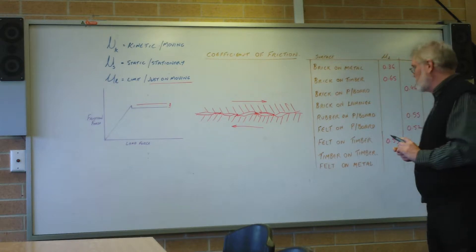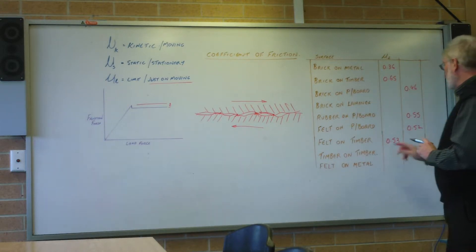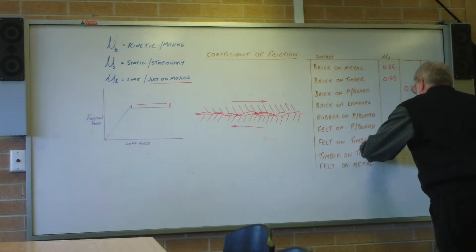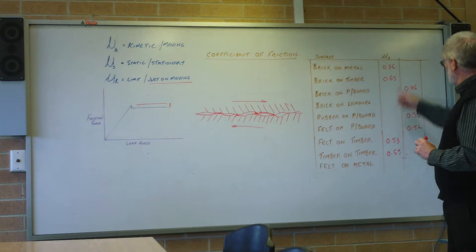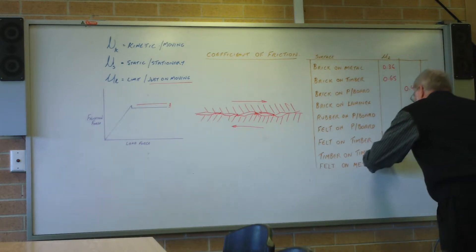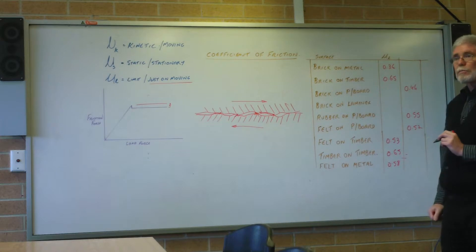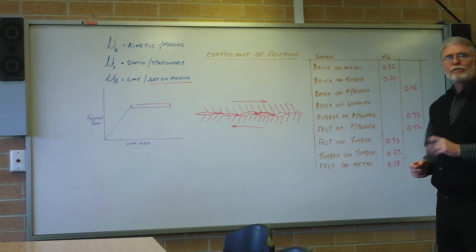Wood on wood, timber on timber - 0.65. Felt on metal - 0.58. That was interesting because the timber should be grippier than the metal surface, because the metal surface was polished.